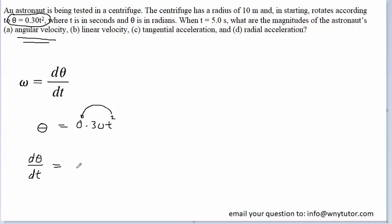So in that rule, we move the exponent down and multiply by the coefficient. So of course, 2 times 0.30 gives us 0.60. We have the variable t, and then we subtract 1 from the power. So we'll end up with t to the first power. So this gives us the magnitude of the angular velocity. We can replace dθ/dt with omega, again, according to the equation above.